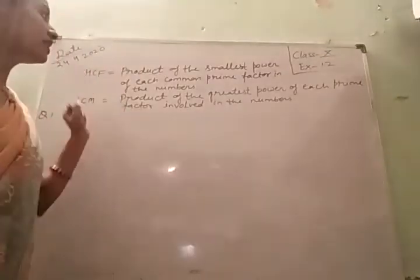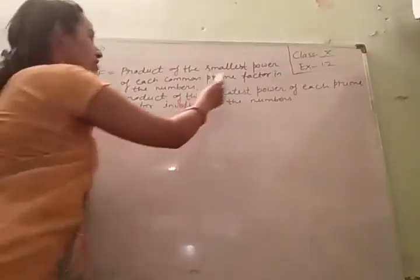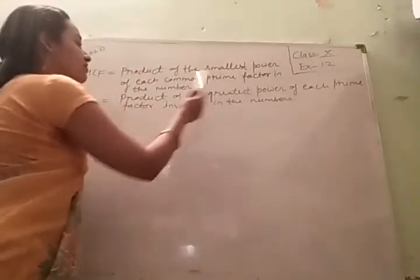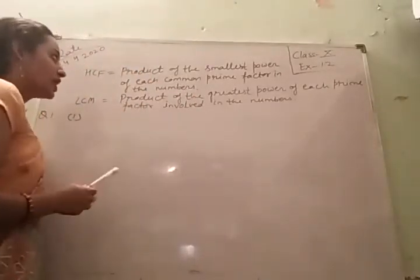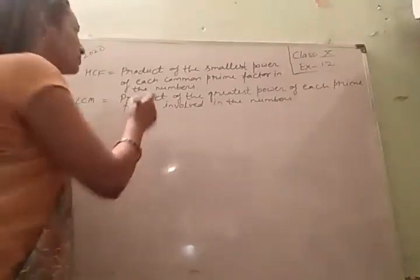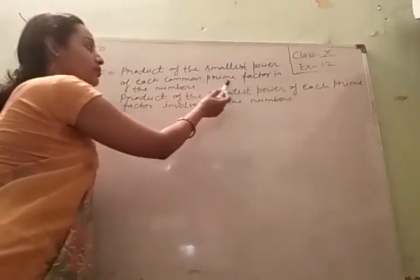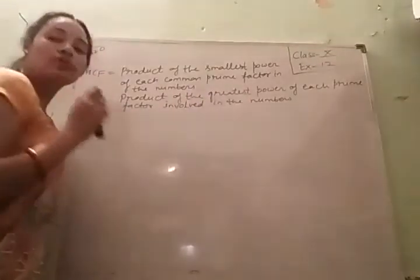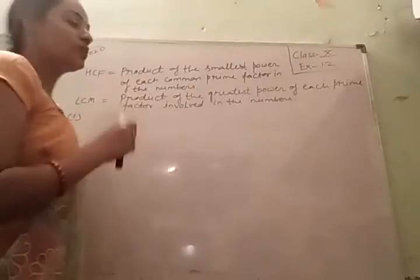First of all, HCF — what is HCF? It is the product of the smallest power of each common prime factor in the numbers. We take what is common, and then the smallest power.